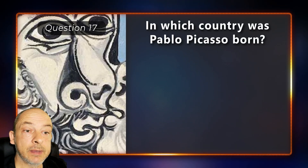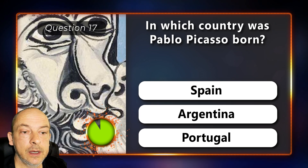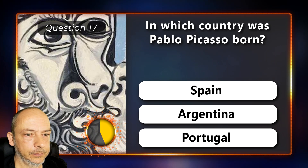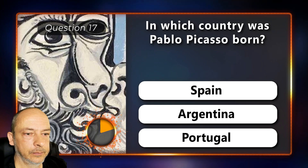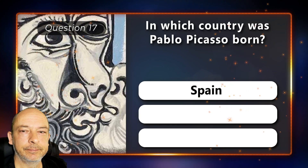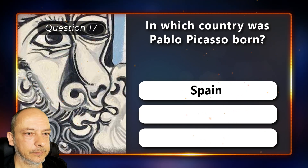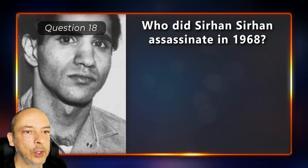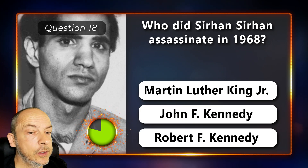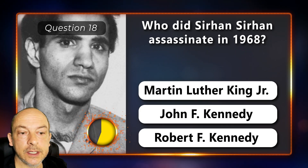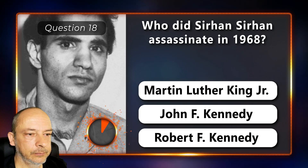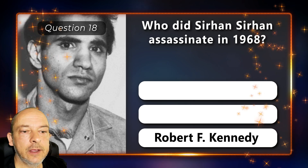In which country was Pablo Picasso born — Spain, Argentina, or Portugal? He was born in Spain. Who did Sirhan Sirhan assassinate in 1968 — Martin Luther King Jr., John F. Kennedy, or Robert F. Kennedy? Robert F. Kennedy.